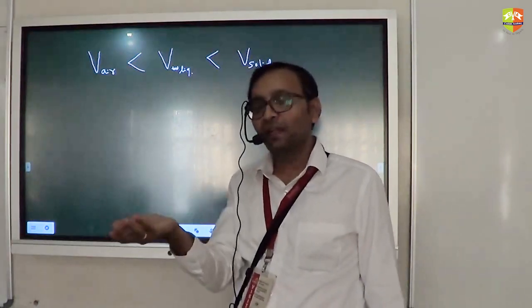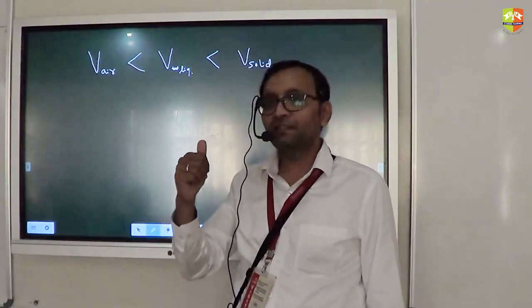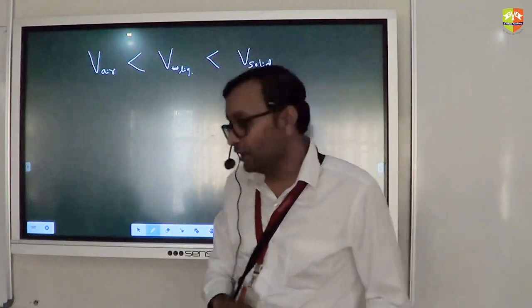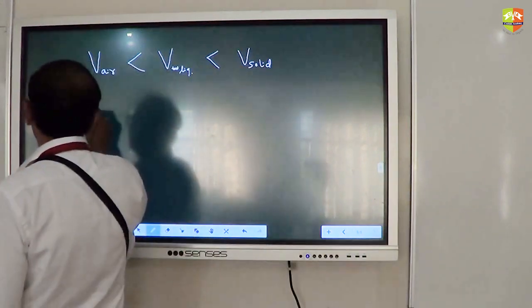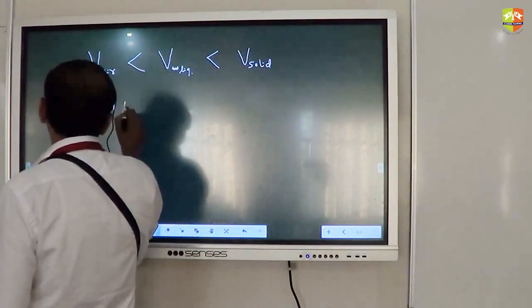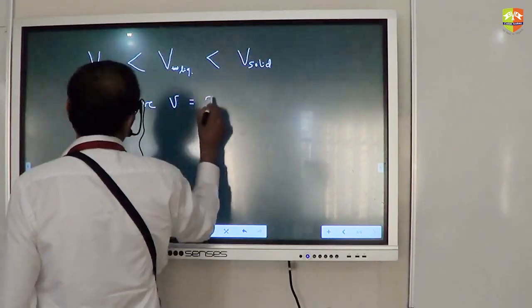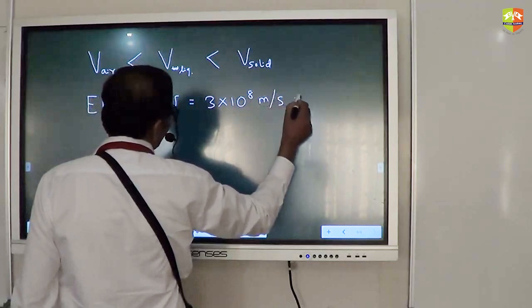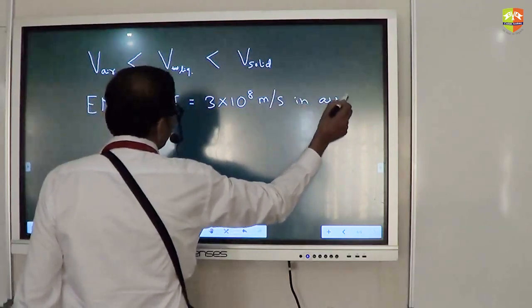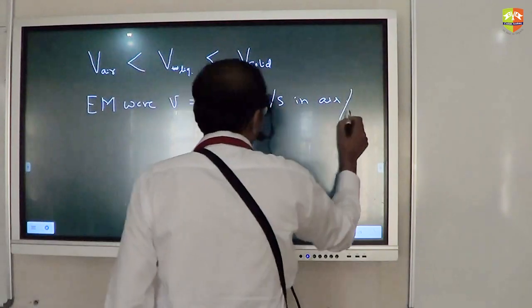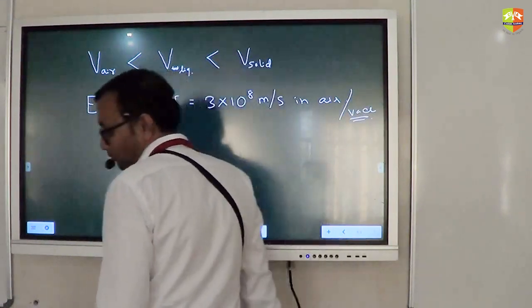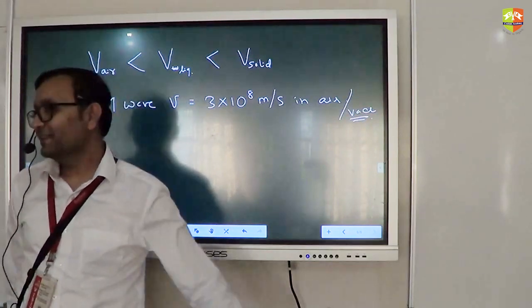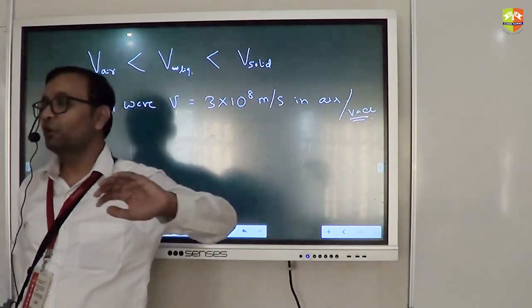And have you, by the way do you know that electromagnetic wave travels with the speed of light? EM wave velocity is speed of light 3×10^8 meter per second in air or vacuum.